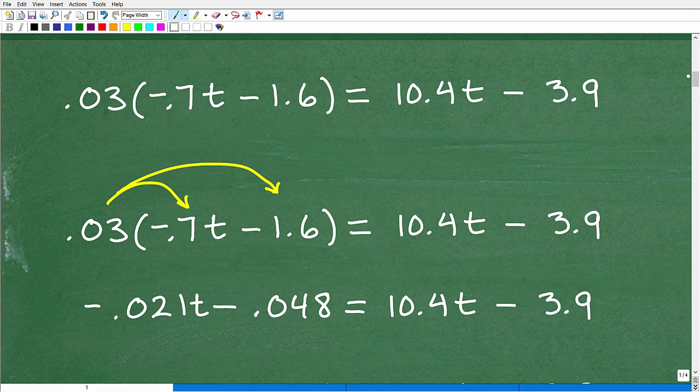So here is our problem. So the first thing we need to do is we've got to do the distributive property. All right, now why that is, well, you want to go back and look at more basic videos. But anytime you have a number being multiplied by a sum or difference and there's a variable in there, you've got to take care of that. That's always going to be your first step.